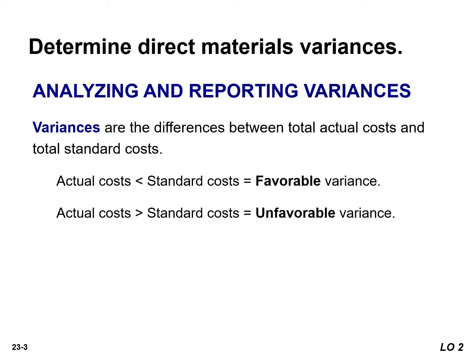When actual cost exceeds standard cost, the variance is unfavorable. An unfavorable variance has a negative connotation — it suggests that the company paid too much for one or more of the manufacturing cost elements, or that it used the element inefficiently.